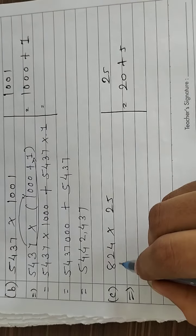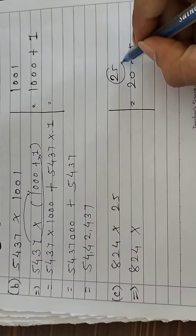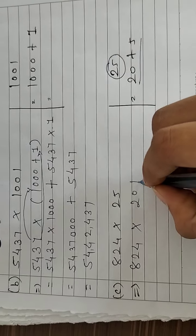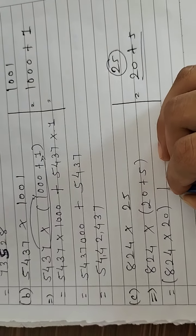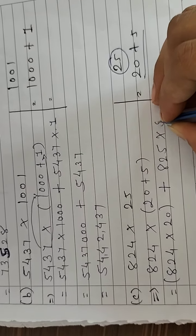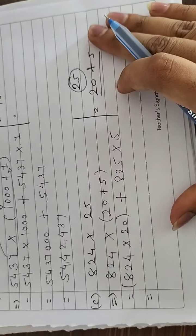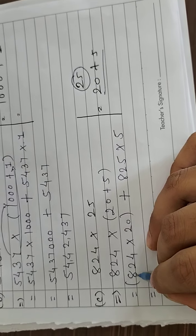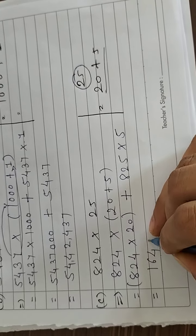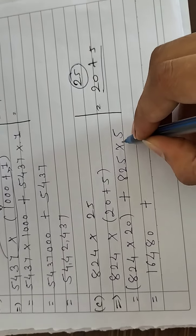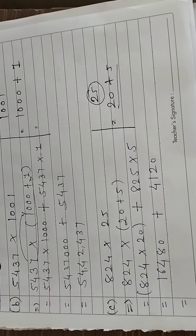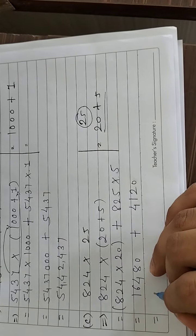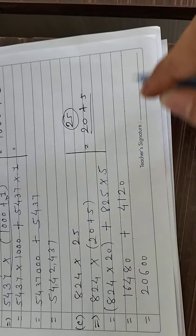चलो further — 824 का multiplication 25 के साथ। 25 means 20 plus 5। 824 को multiply करो 20 के साथ, plus 824 को multiply करो 5 के साथ। दोनों का addition करते हैं तो 20,600 मिलेगा।